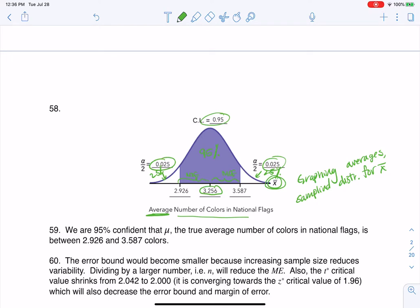And then last but not least, let's interpret it. We are 95% confident that mu, the true average number of colors in national flags, is somewhere between 2.926 and 3.587 colors. Thanks so much, everyone. Bye.